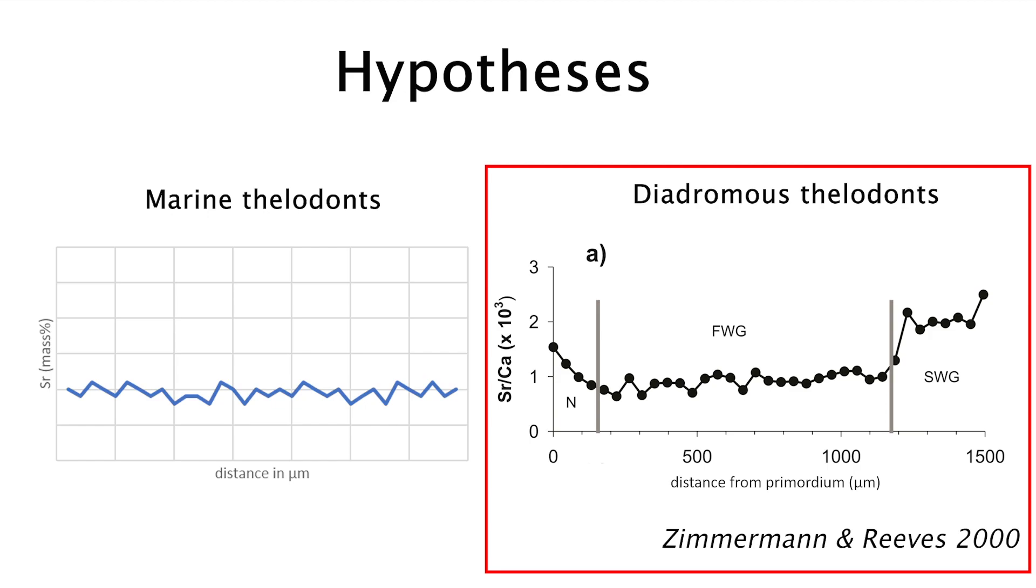On the other hand, migratory thelodont samples should show a changing pattern in strontium from low absolute values during their freshwater phase towards higher values during their stay in marine water.